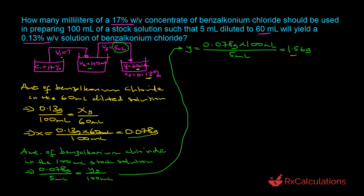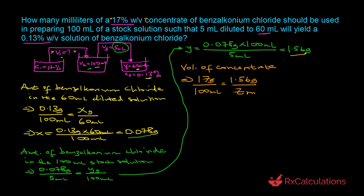All 1.56 grams of benzalkonium chloride in the 100-milliliter stock solution came from the volume taken from the concentrate. Using the 17% weight-by-volume concentration of the concentrate — meaning 17 grams per 100 milliliters — we solve for the volume z that gives 1.56 grams: z = 1.56 g × 100 mL ÷ 17 g = 9.18 milliliters.